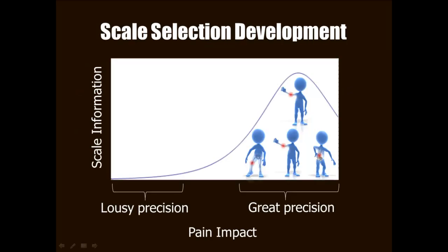You've seen a picture like this before. It's an information function, but it's not an item information function. It's a scale information function. It shows the information you would get if you summed across the information of all the items in a scale. It's also different in that it has androgynous blue humanoids to illustrate levels of pain impact. The scale information function is very handy because it helps you identify areas of the measurement continuum where a scale is measuring well, and also where it's not measuring very well at all.